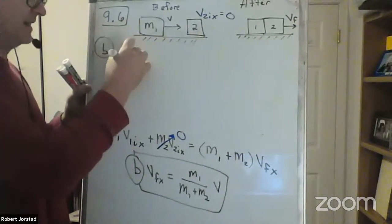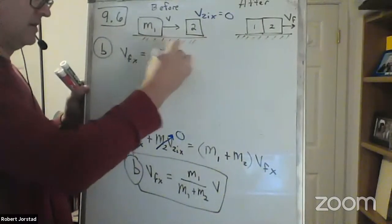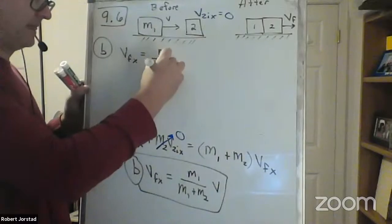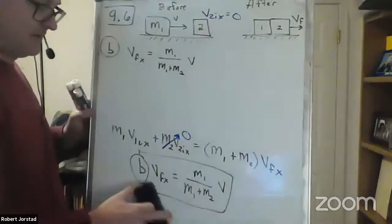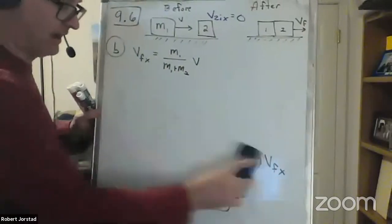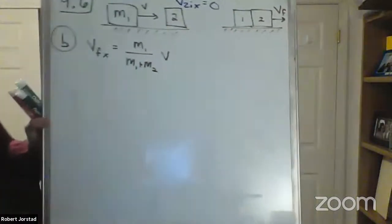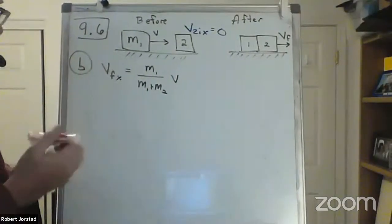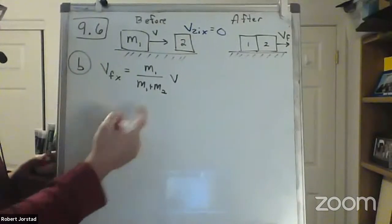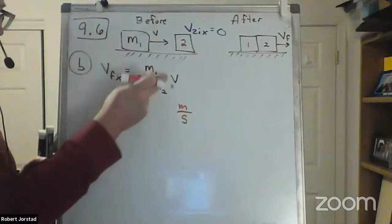The answer to part B was V final in x equals M1 over the total mass times V. Before we go on, we should check a couple of things. What's one thing we should always check? Units. Does this have the right units?